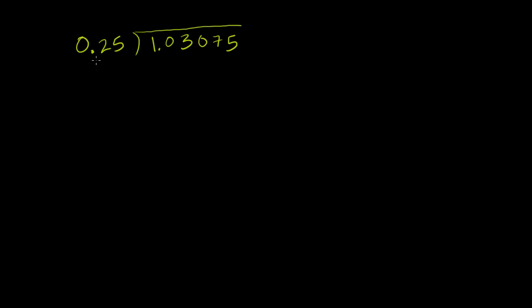So every time you multiply something by 10, you're shifting the decimal over to the right once. So in this case, we want to shift it over to the right once and twice. So 0.25 times 10 twice is the same thing as 0.25 times 100, and we'll turn the 0.25 into 25.